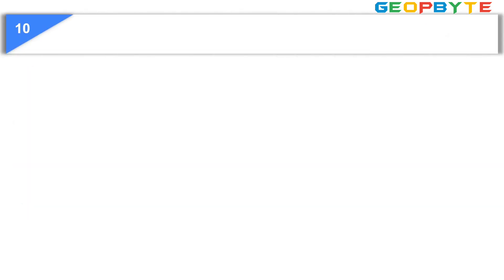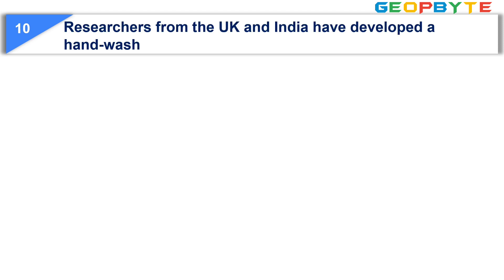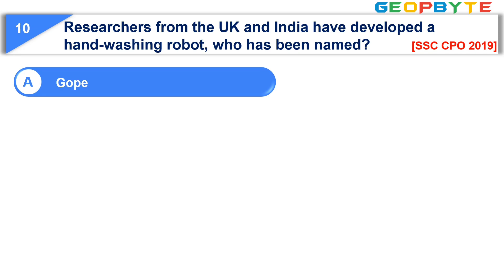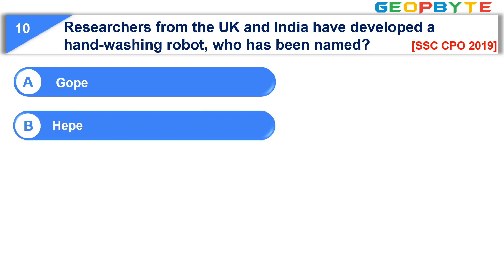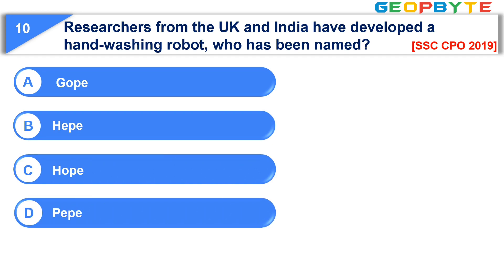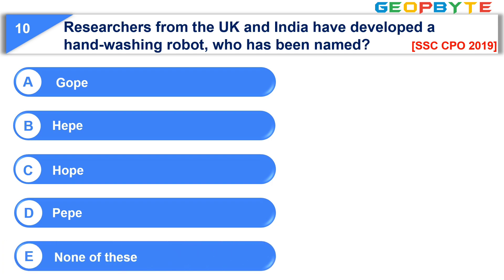Question number ten: Researchers from the UK and India have developed a hand-washing robot that has been named — option A: GOP; option B: HEAP; option C: HOPE; option D: PEEP; option E: none of these. The correct answer is option D: PEEP.